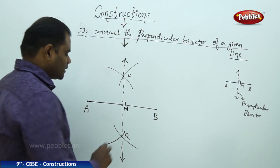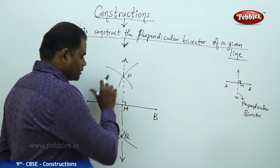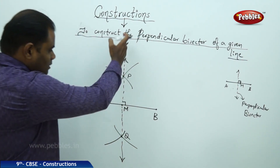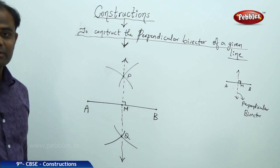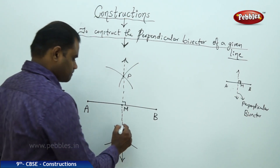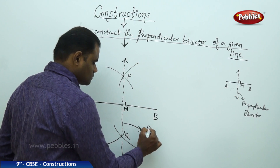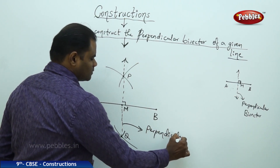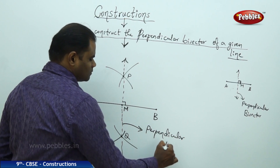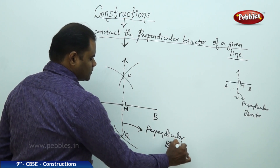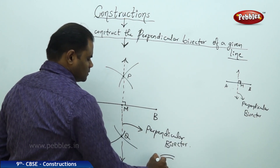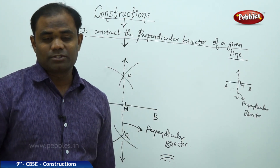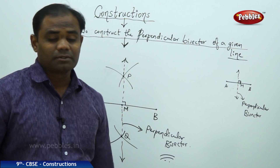Therefore, by taking the compass more than half and cutting two arcs, we get the perpendicular bisector PQ, which is obtained through the construction process.